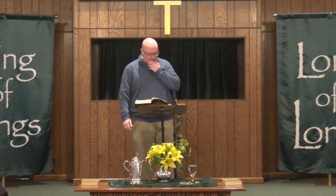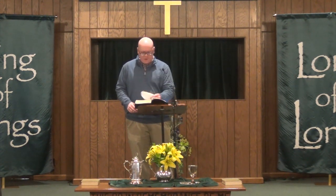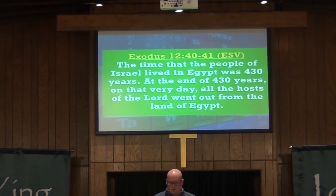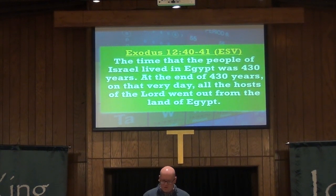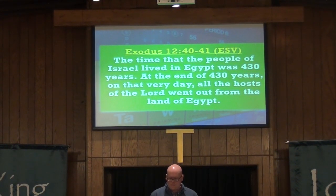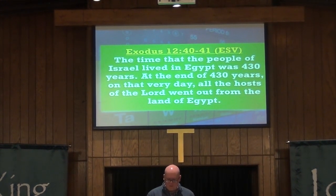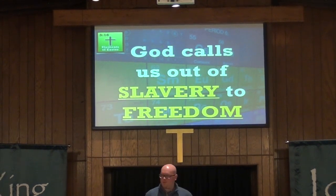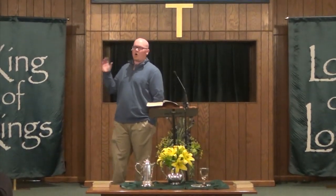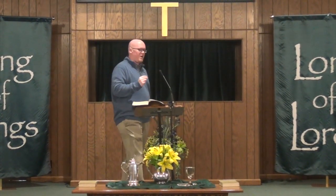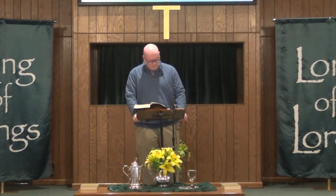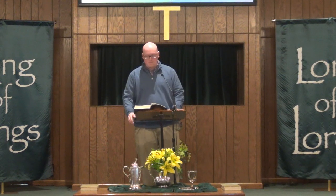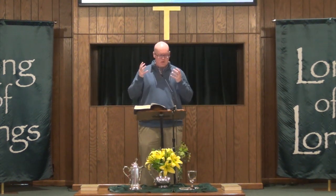The fourth truth we learn about God is this. Exodus chapter 12, verses 40 and 41: 'The time that the people of Israel lived in Egypt was 430 years. At the end of 430 years, on that very day, all the hosts of the Lord went out from Egypt.' God calls His people out of slavery to freedom. After 430 years of bondage, God called them out. The Exodus is a beautiful picture of what Christ does for anyone who believes — Israel was in the land of slavery, but all people are enslaved to sin. Moses delivered them out of Egypt, and Jesus delivers you from your sin.